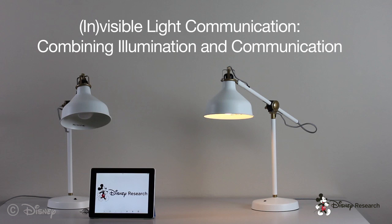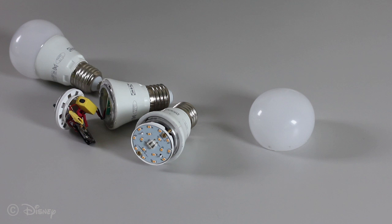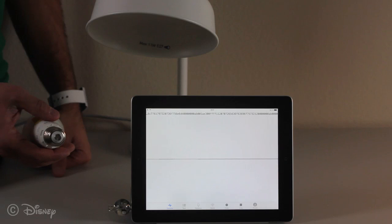In this project we demonstrate the use of light as a key enabler to the Internet of Things. Visible light communication uses LED lights not only for illumination but also for communication. LED light bulbs with a small microcontroller inside transmit and receive data.